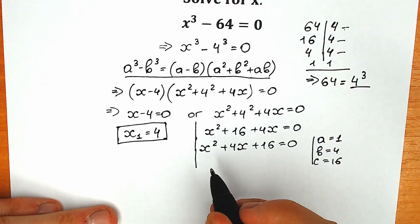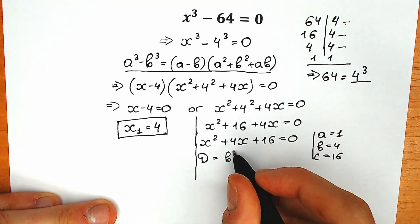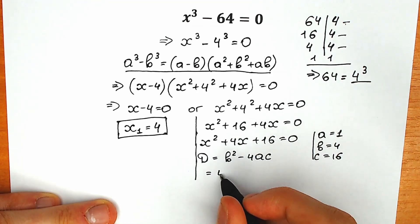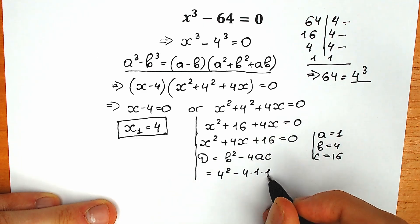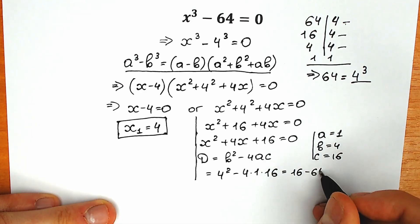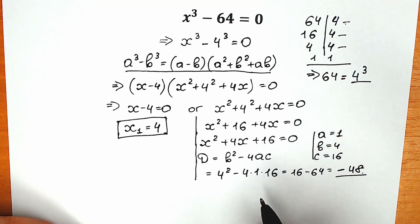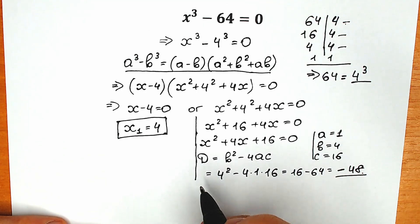Now let's plug into the discriminant formula. We have b-square minus 4ac: 4-square minus 4 times 1 times 16, so we get 16 minus 64, which equals minus 48. A lot of students are confused because the discriminant is negative — less than zero. But that means we are not dealing with real numbers here; we're looking for complex numbers. So let's continue.